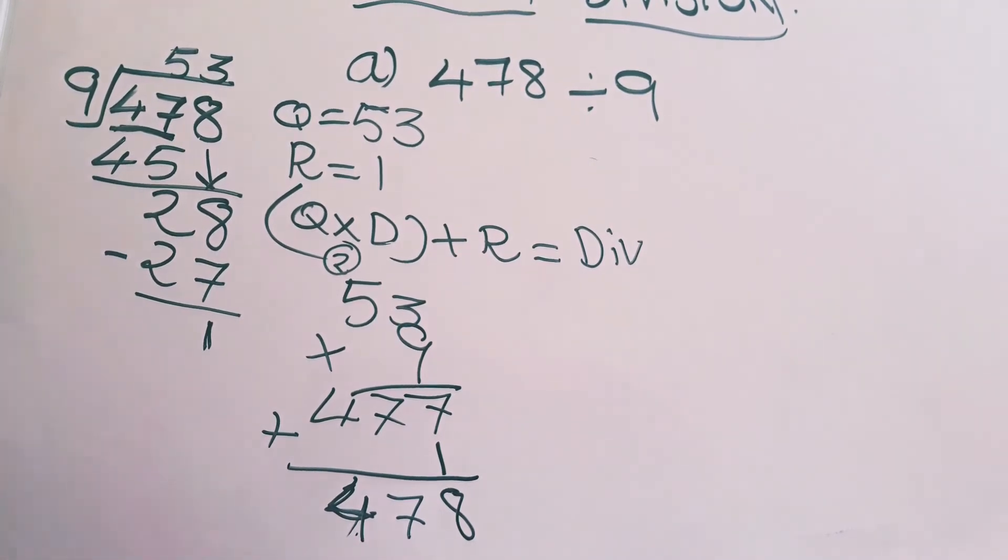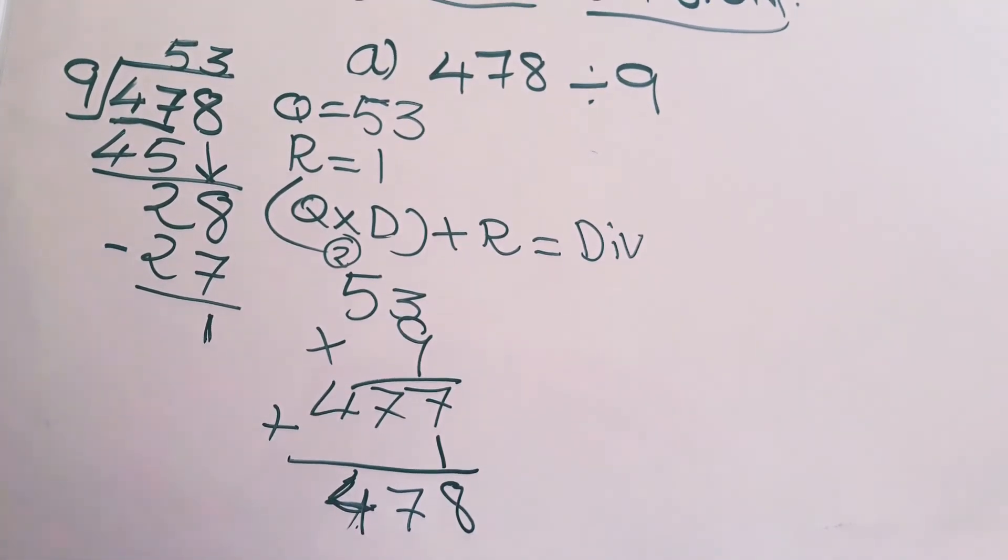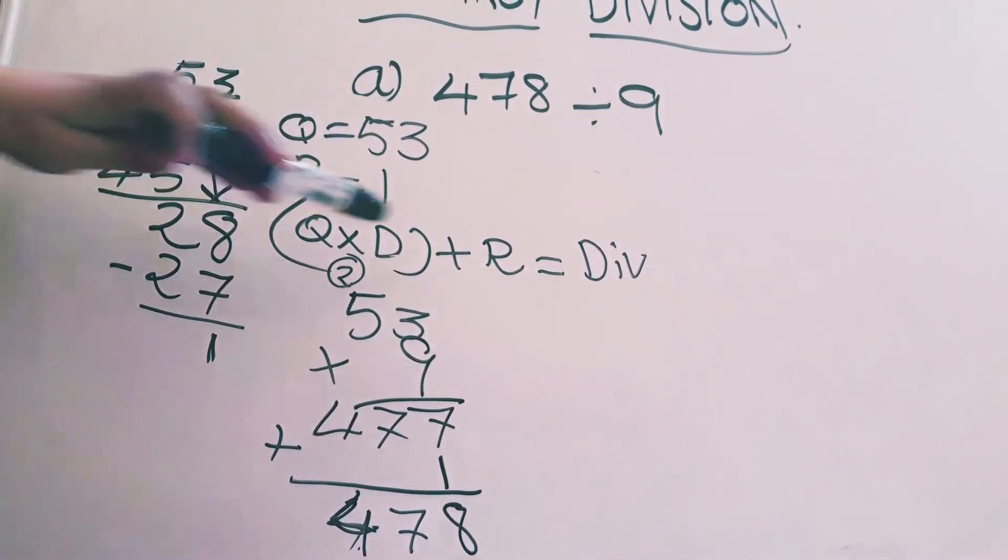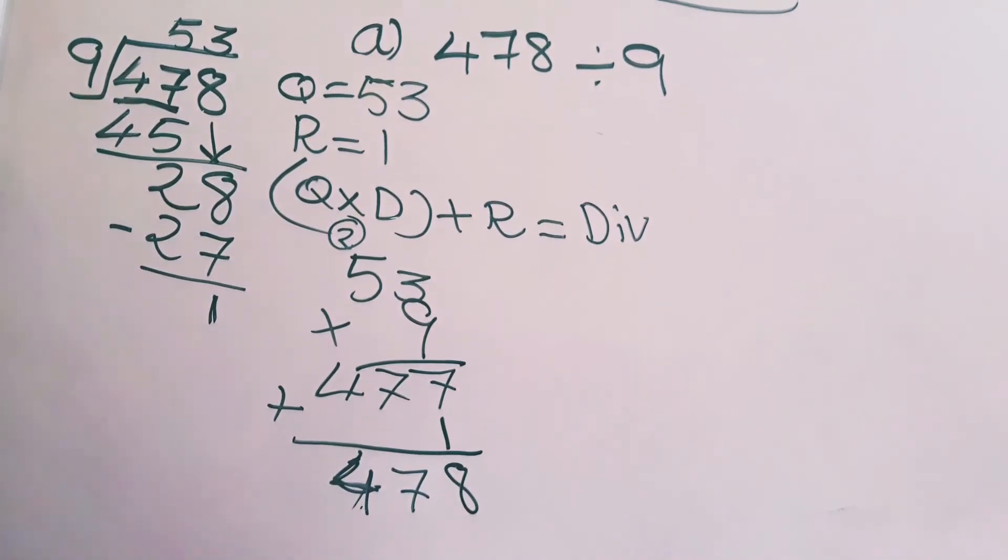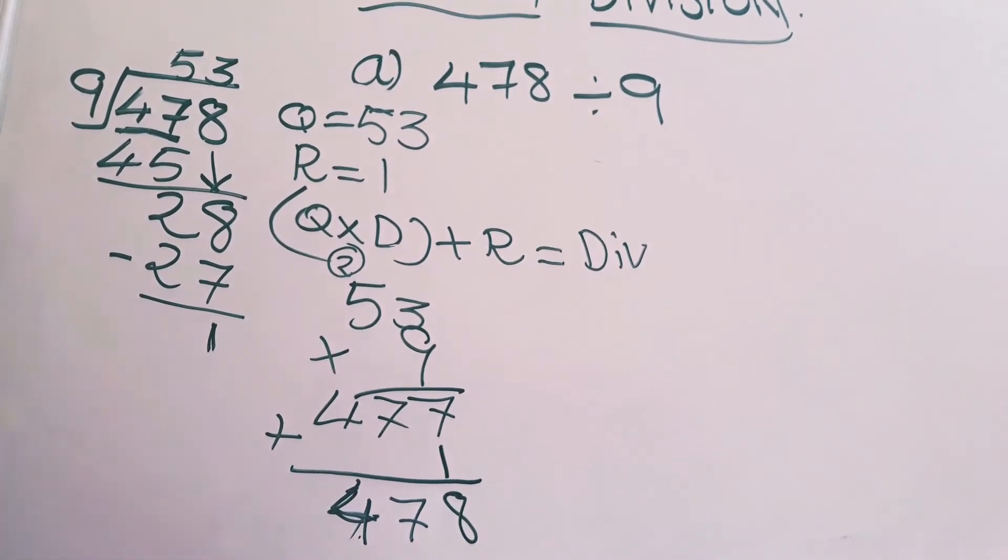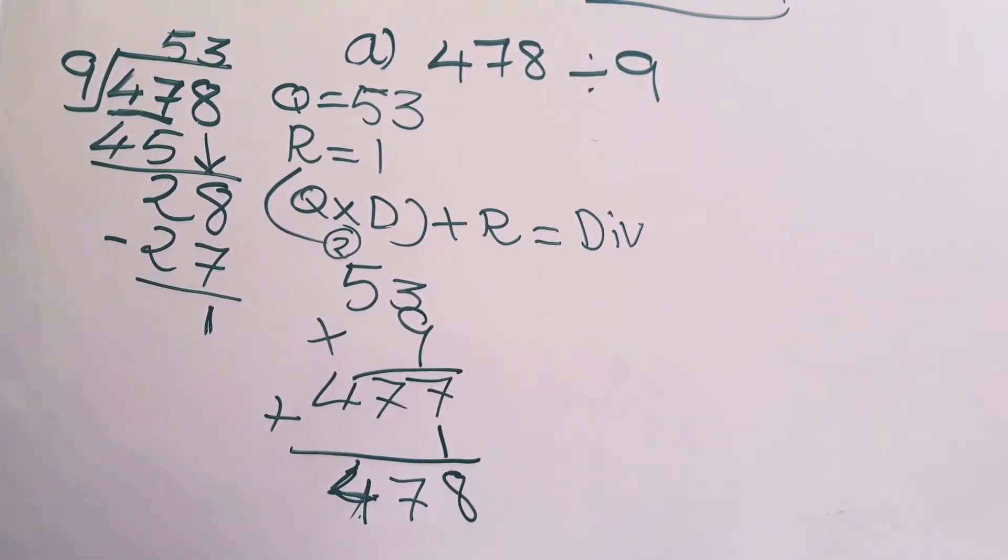You have to remember Q into D plus R. When you do Q and D multiply, with that answer add the remainder, you should get dividend. Then your division is correct. Let's see another example also.